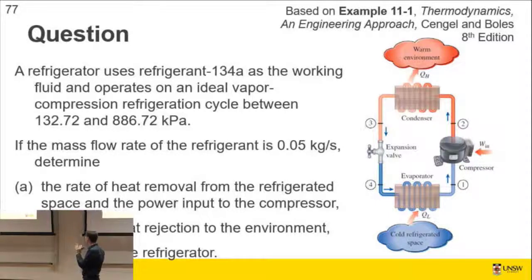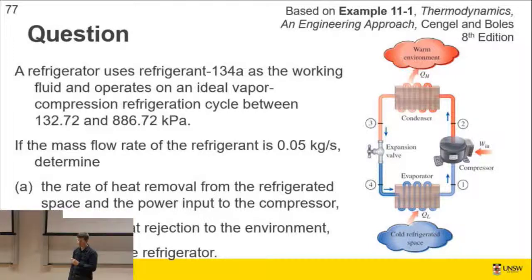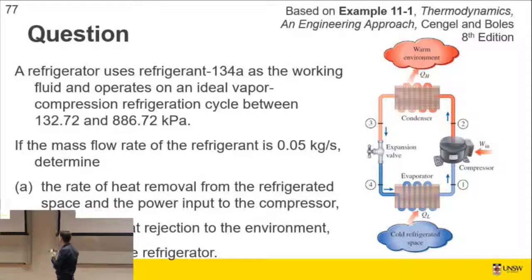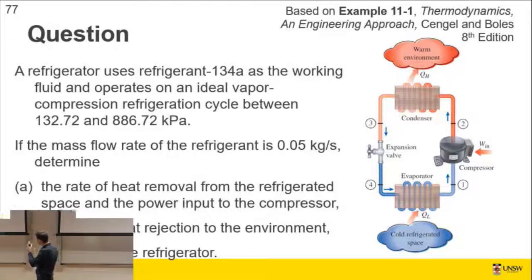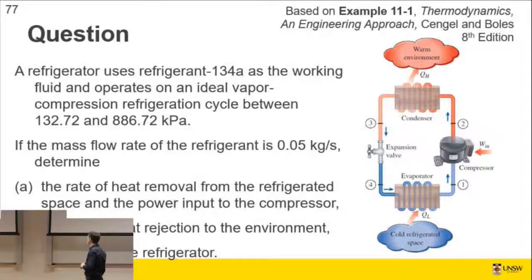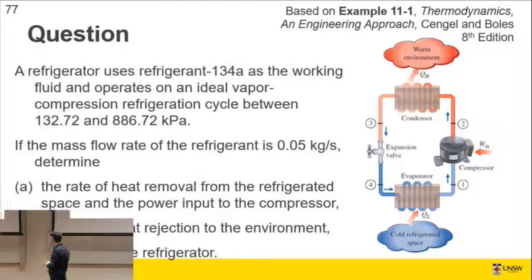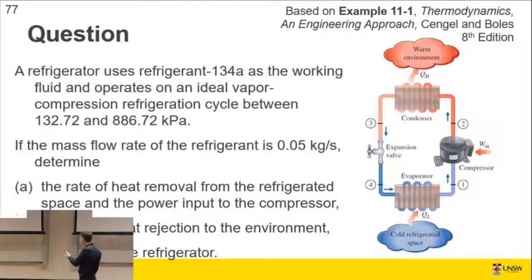If a refrigerator uses a refrigerant as the working fluid - so we need to know a little bit about refrigerants now, we're not talking about water anymore - it operates on an ideal vapor compression refrigeration cycle between two pressures. The pressures are chosen to avoid interpolation. Mass flow rate of refrigerant is given. Determine the rate of heat removed from the refrigerated space and the power input to the compressor.